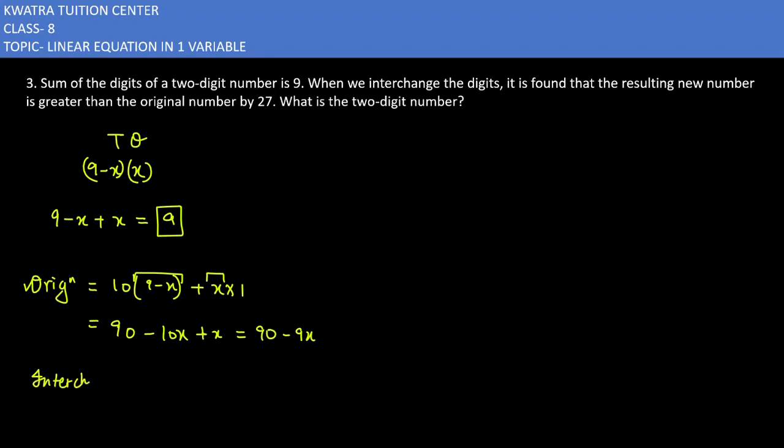If we interchange, x will be with 10 and 9 minus x will be with 1. So the value will be 10x plus 9 minus x, which simplifies to 9x plus 9.